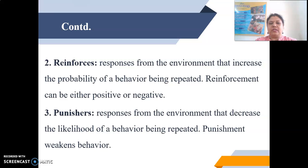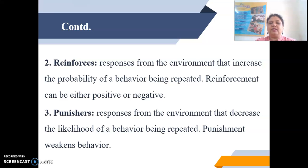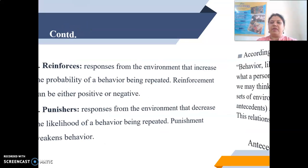The second type is reinforcers: responses from the environment that increase the probability of a behaviour being repeated. Reinforcement can be either positive or negative. The third type is punishers: responses from the environment that decrease the likelihood of a behaviour being repeated. Punishment weakens behaviour.